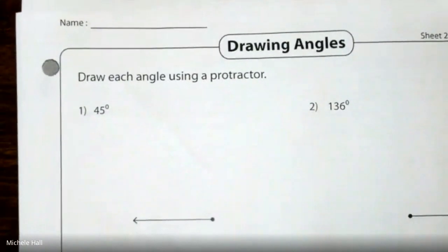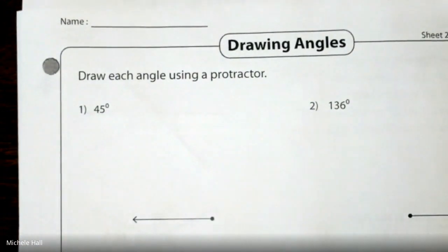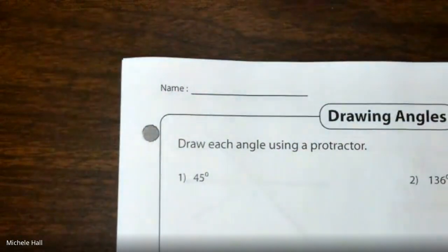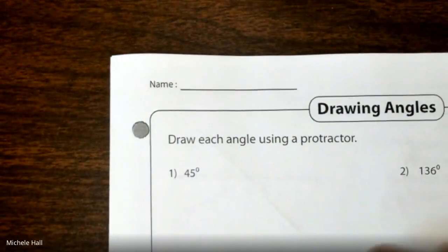Okay, where is your protractor and compass? You're going to need it. Draw each angle using a protractor. We're not doing all of them. We're just practicing our skills right now because we will be heading towards another test. All we have is area and perimeter left and then it's test time.